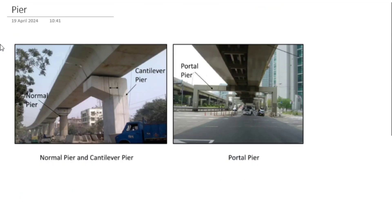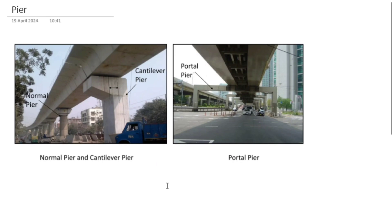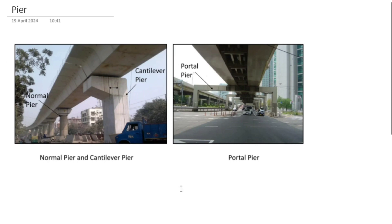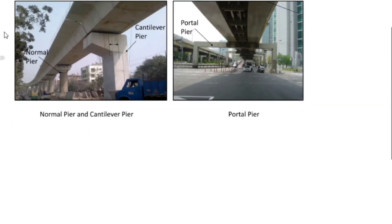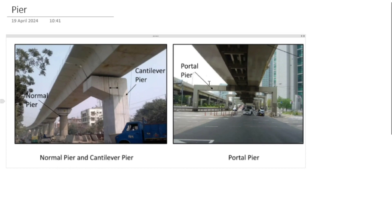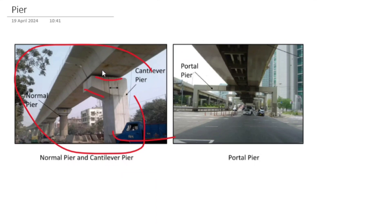After that, the substructure — the pier. The pier also has the normal type, cantilever, and portal types. As you can see, this is the cantilever pier and this is the portal pier.